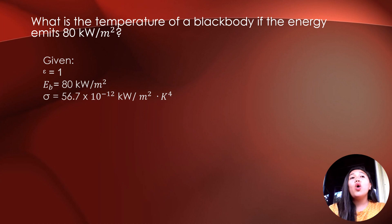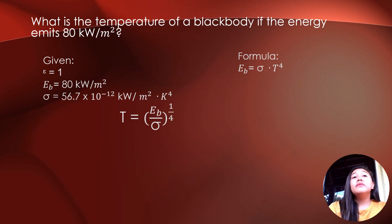So the formula of the emissive energy of a blackbody is equals to the Stefan constant times the absolute temperature raised to 4. Since we are looking for the temperature of a blackbody, we can rewrite the formula as temperature equals emissive energy of a blackbody over the Stefan constant, raised to 1 fourth.